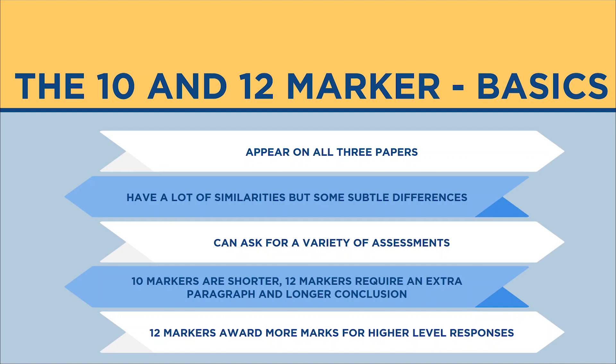The 12 markers do award more marks for higher level responses. I'm going to show you the grade boundaries and the marking grids, and you'll be able to see that in level three and four you get much more marks on a 12 marker than you do on a 10. So it's therefore important that our 12 markers have that little bit of extra detail to get those extra marks.